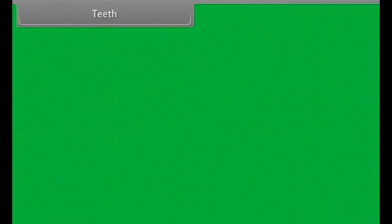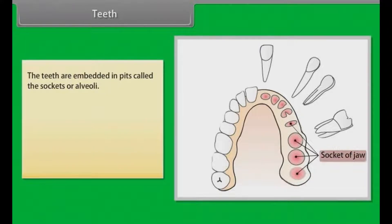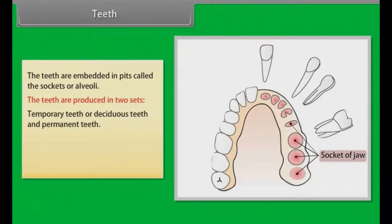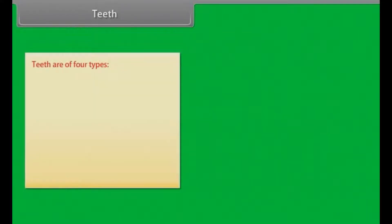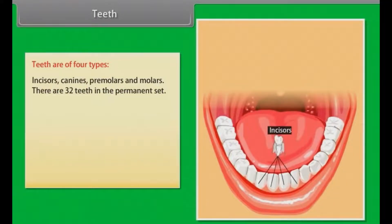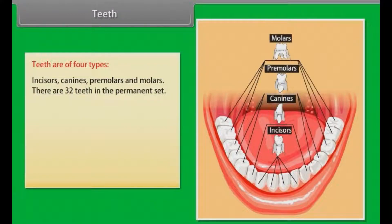Teeth are present in both the jaws in the form of semi-circular arches. The teeth are embedded in pits called the sockets or alveoli. The teeth are produced in two sets: temporary teeth or deciduous teeth, and permanent teeth. Human teeth are diphyodont because milk teeth are replaced by permanent teeth in humans. Teeth are of four types: incisors, canines, premolars, and molars. There are 32 teeth in the permanent set.